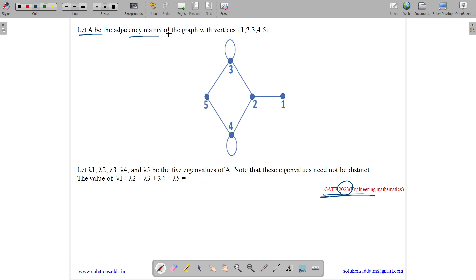let A be the adjacency matrix of graph with vertices 1, 2, 3, 4 and 5. Let lambda 1, lambda 2, lambda 3, lambda 4 and lambda 5 be the 5 eigenvalues of A.